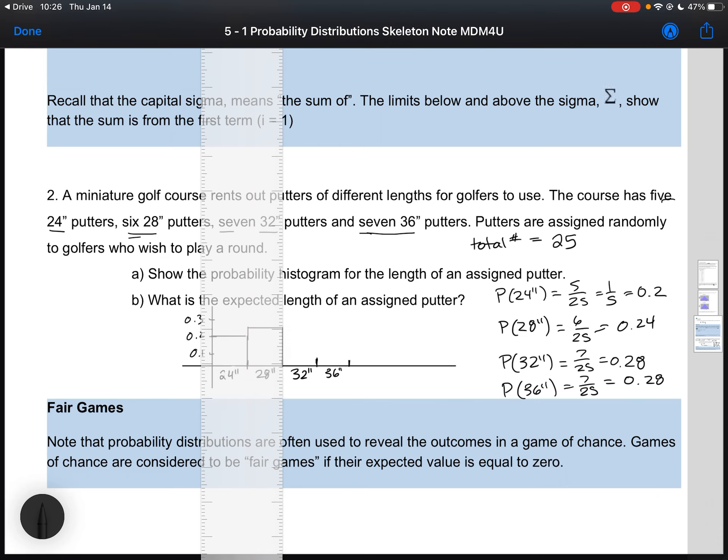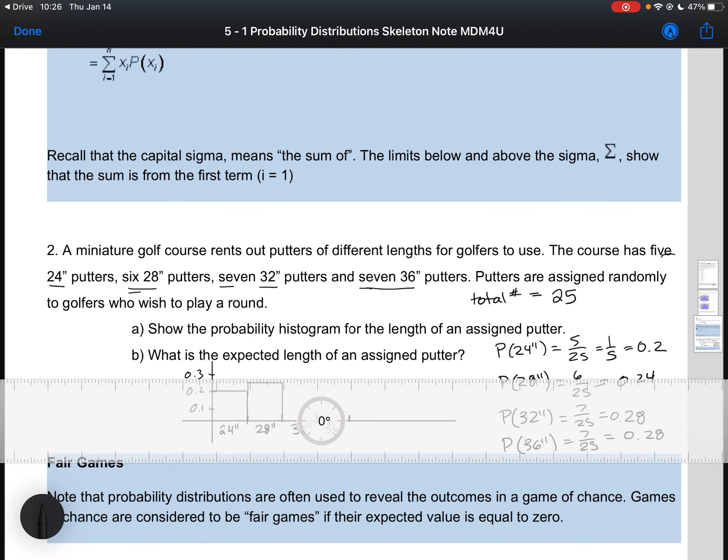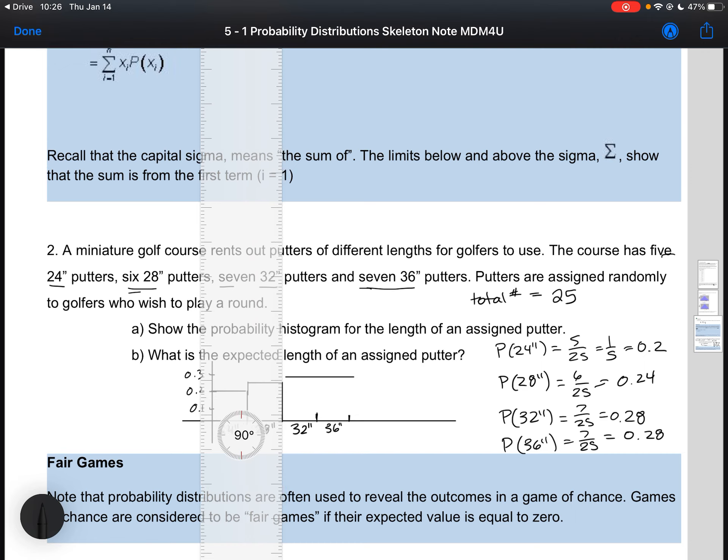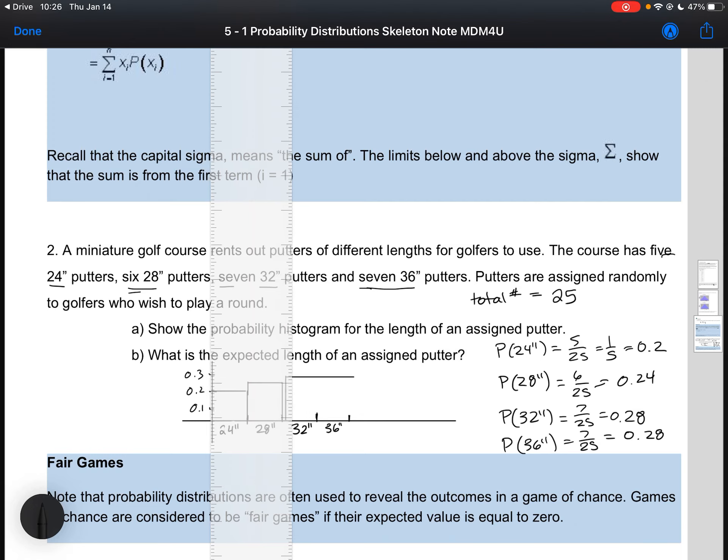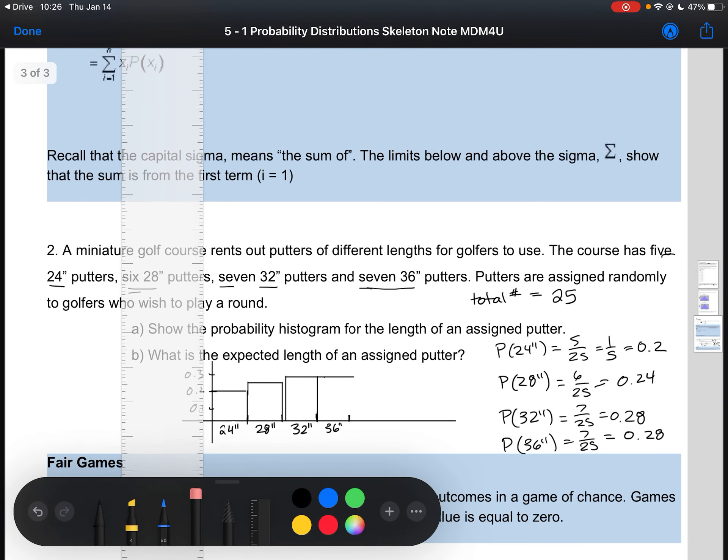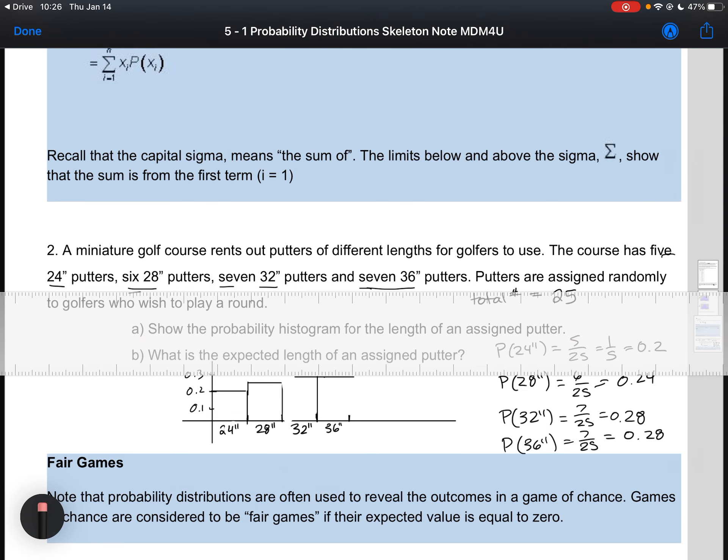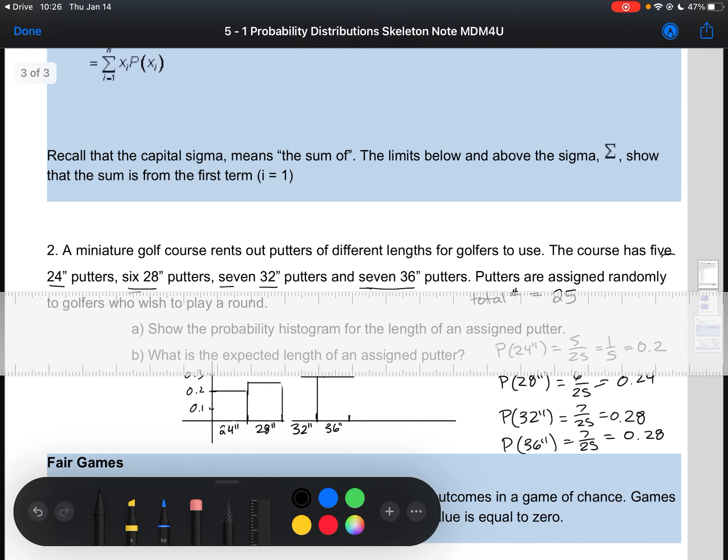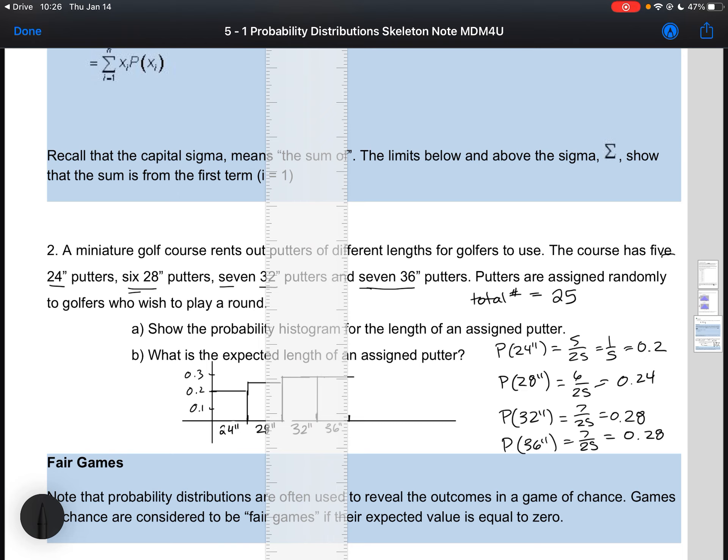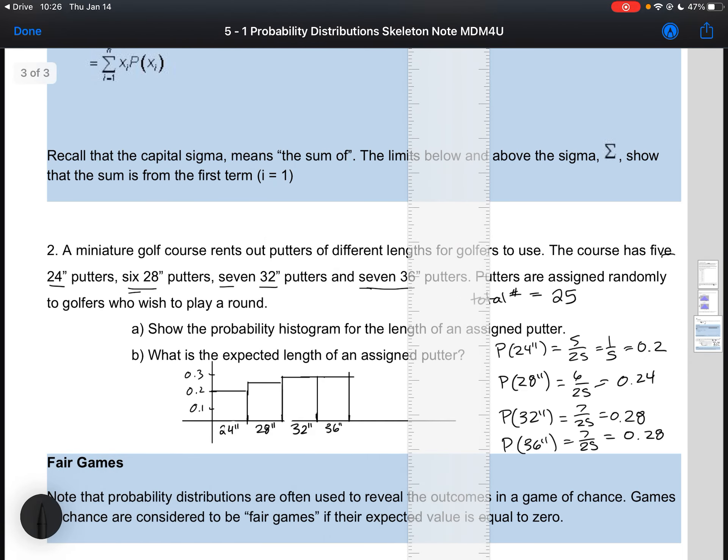Filling in my bars here. My 32-inch putter, so 28. And 32 and 36 are the same. I'm just going to draw that line all the way across. Because this data is continuous, I'm going to make my bars together. Here we go.